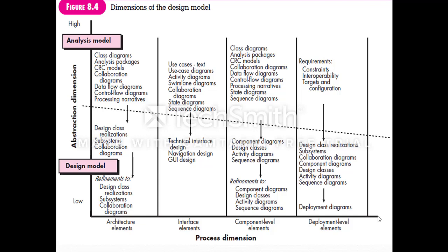The first dimension is the process dimension and the next one is the abstraction dimension. The process dimension has four types of elements, and these four elements indicate the evaluation of the design model. That is described by the process dimension.